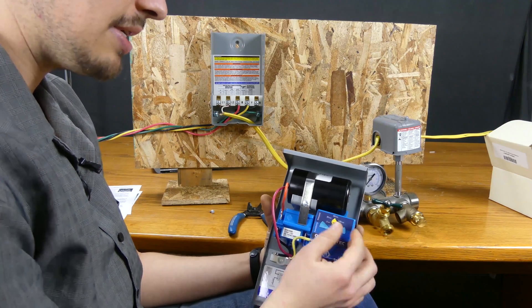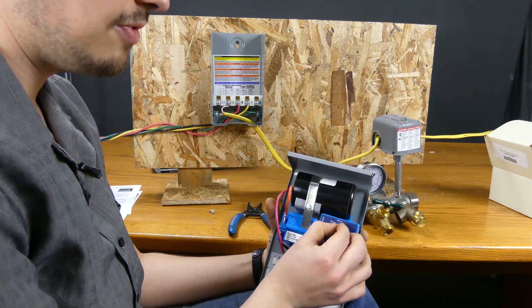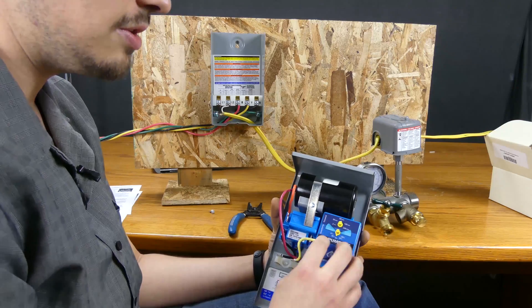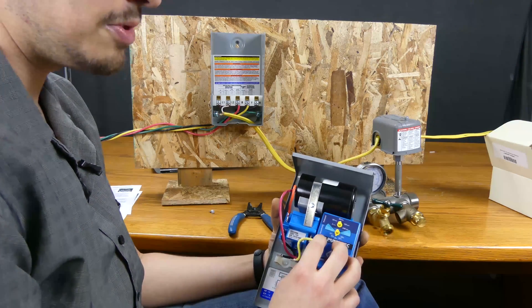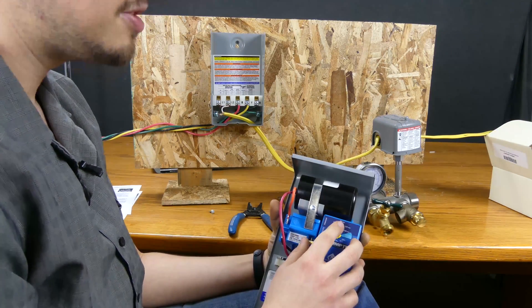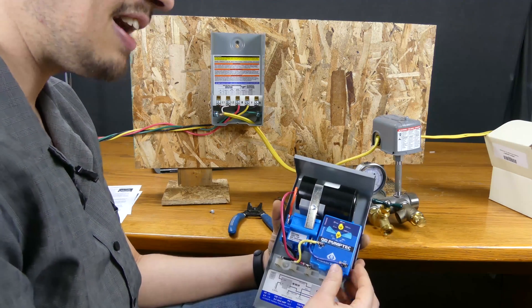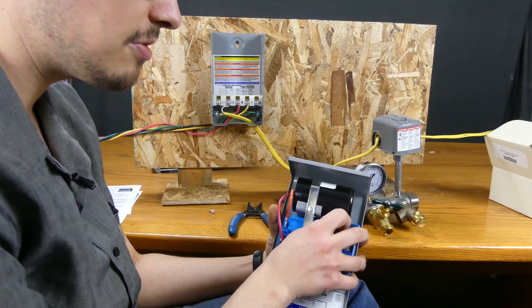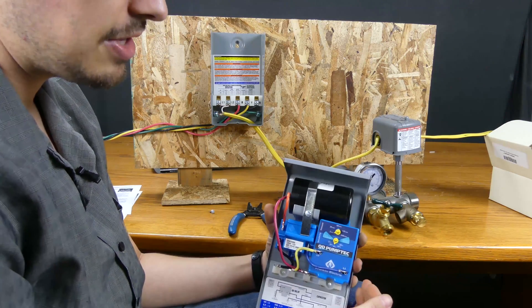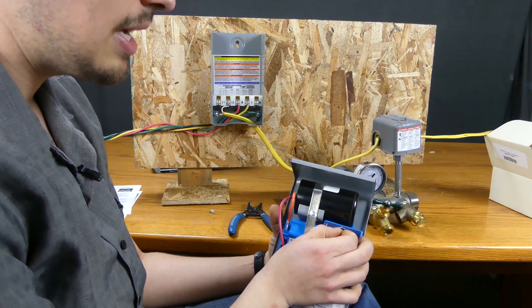And then the only other adjustment here is the timeout, so it's default to 60 minutes. So when this trips the pump you're going to have a 60-minute timer that starts and then the system will turn back on after that 60 minutes. This can be increased as far as 240 or decreased as low as two minutes.